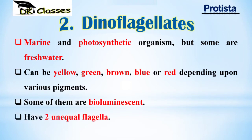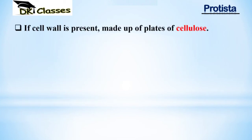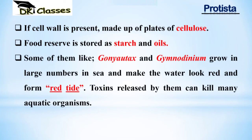Dinoflagellates have two unequal flagella. If a cell wall is present, it is made up of plates of cellulose, though mostly they do not have a cell wall. Their food reserve can be in the form of starch or oils.